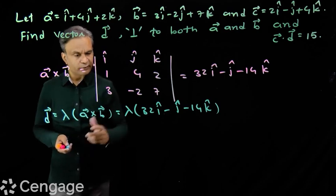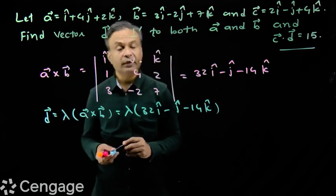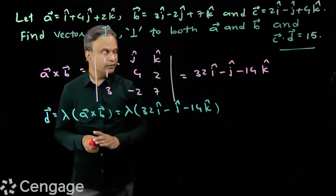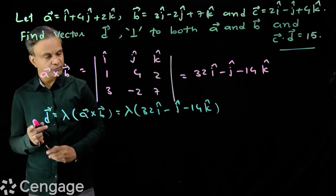Now we have to get the value of lambda. For that, we have this help, that c dot d is equal to 15. To find lambda's value, we have one piece of information. C dot d's value is 15, so we use that.